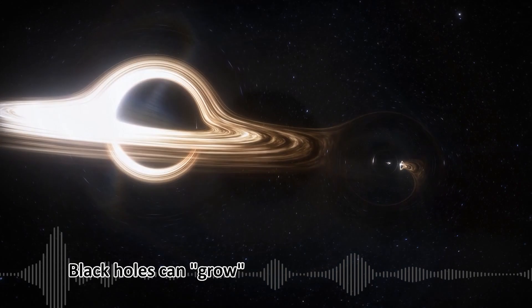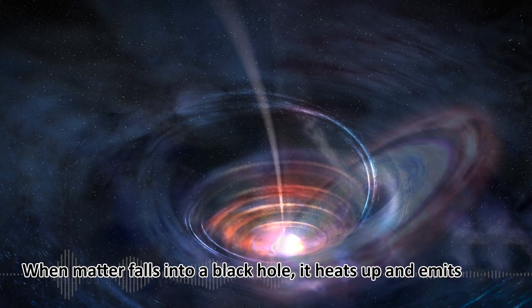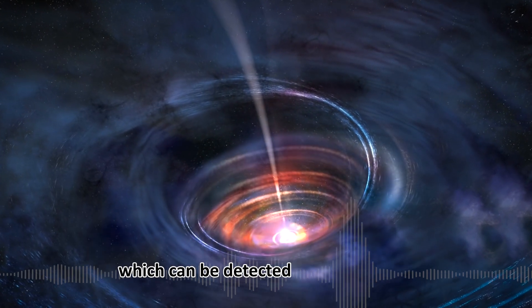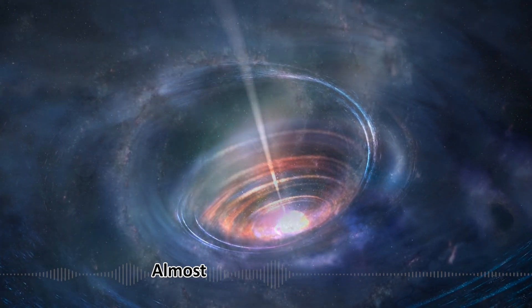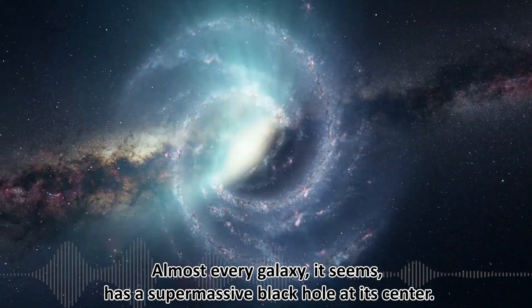Black holes can grow by absorbing nearby matter. When matter falls into a black hole, it heats up and emits X-rays, which can be detected with telescopes. Almost every galaxy, it seems, has a supermassive black hole at its center.